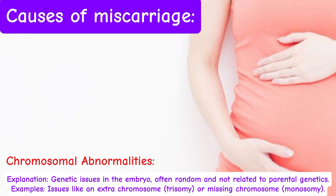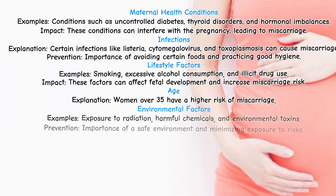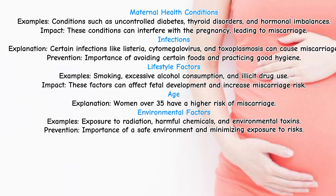Examples of chromosomal issues include an extra chromosome (trisomy) or a missing chromosome (monosomy). Maternal health conditions such as uncontrolled diabetes, thyroid disorders, and hormonal imbalances can also interfere with pregnancy and lead to miscarriage.